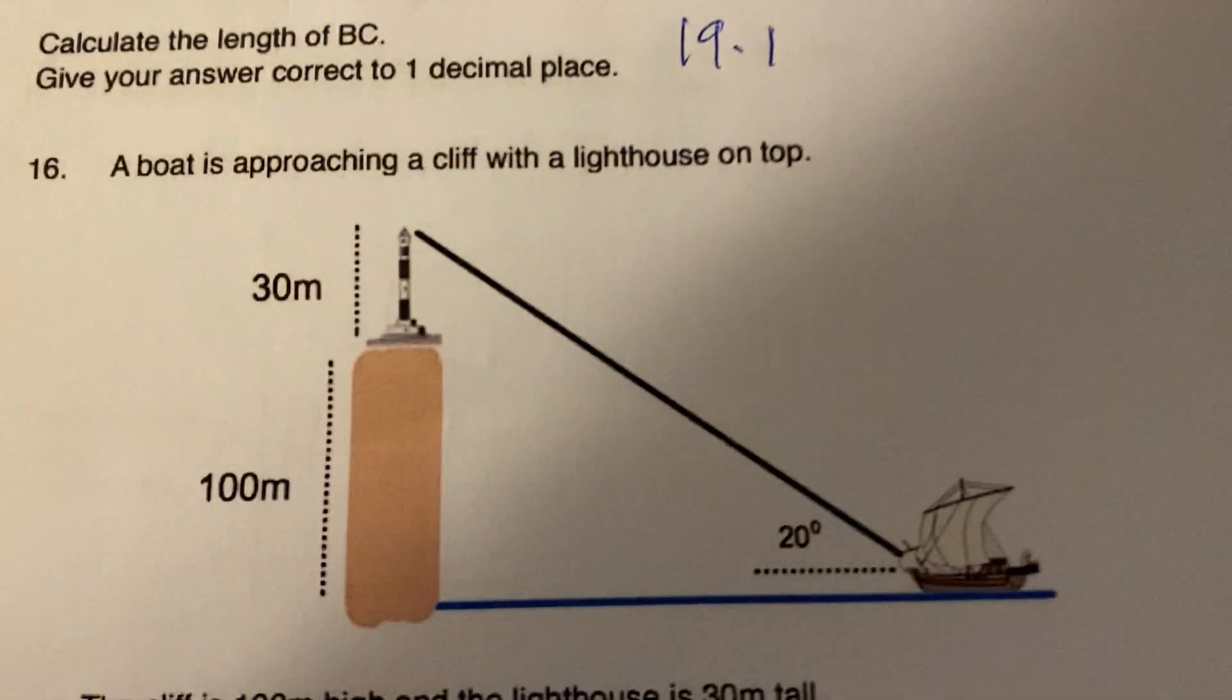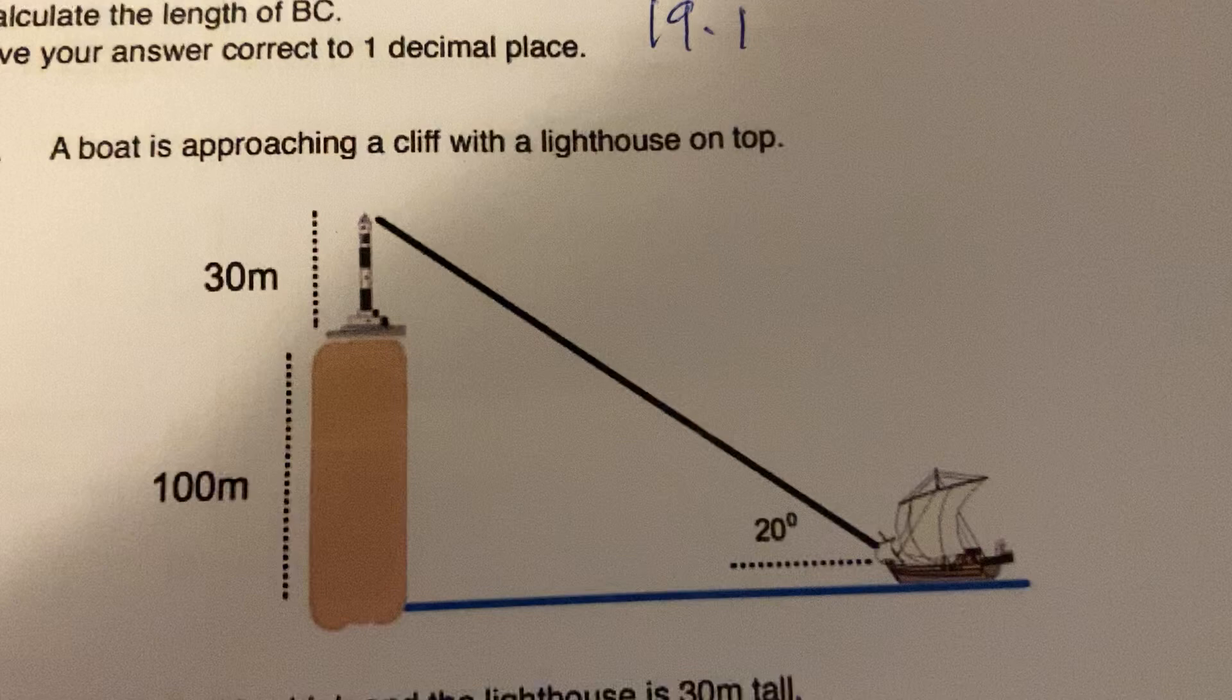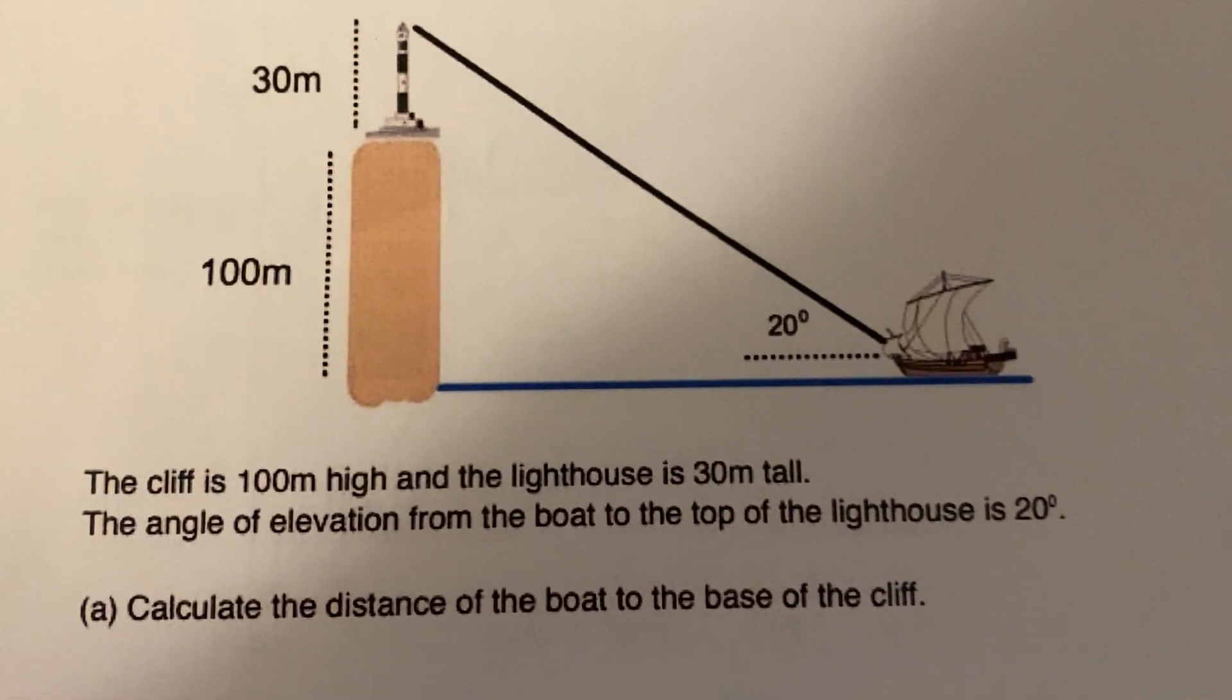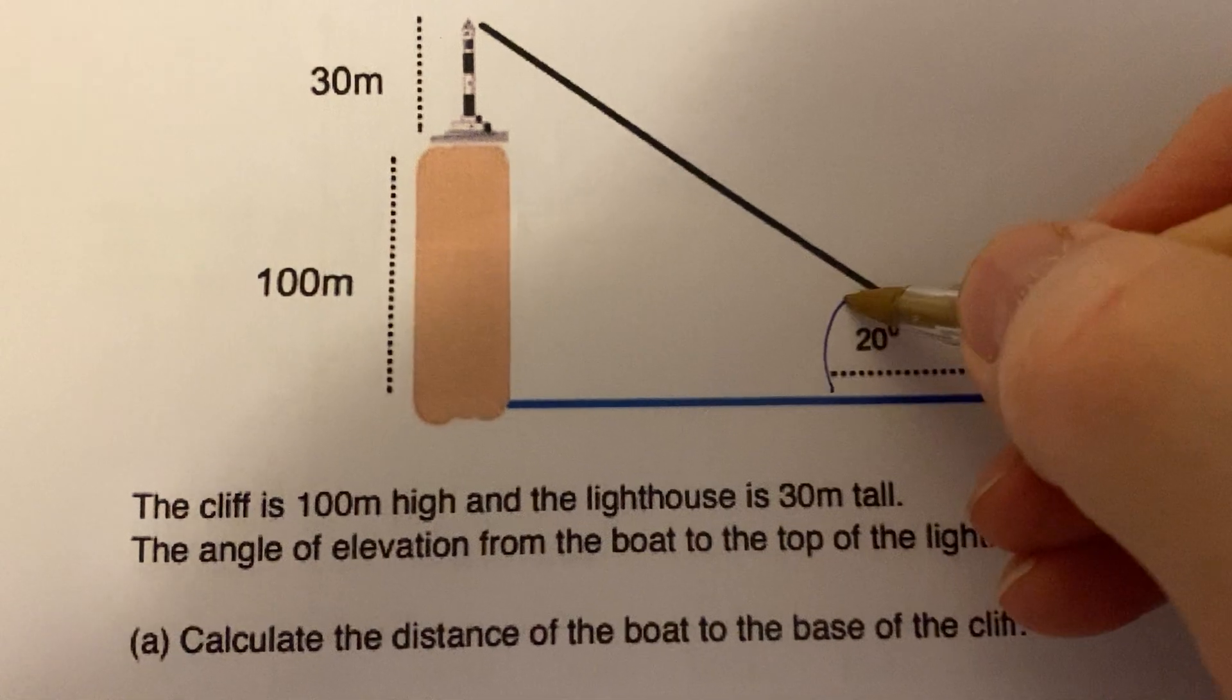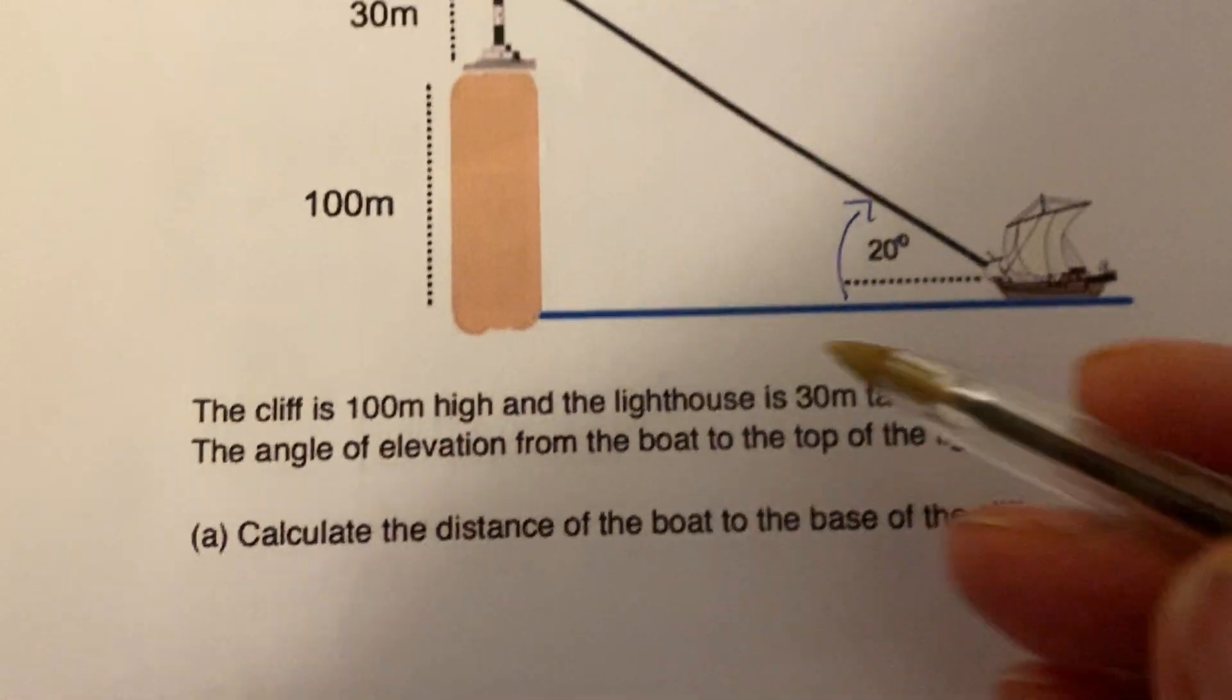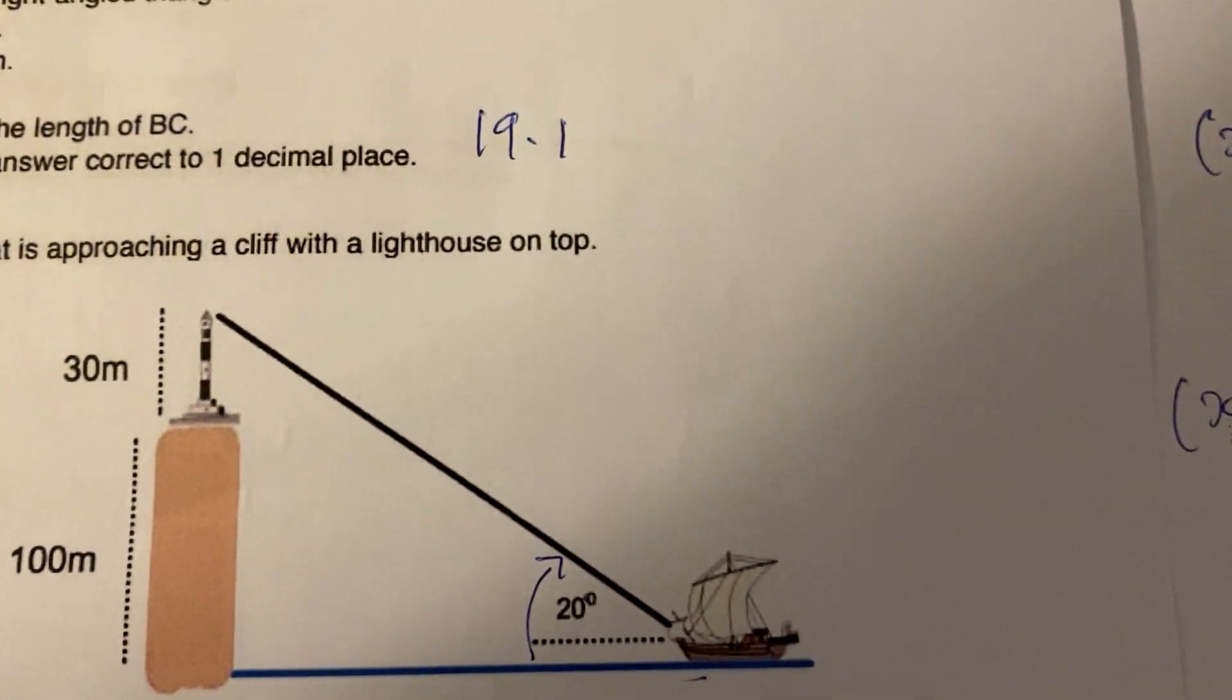Right, a boat is approaching a cliff with a lighthouse on top. The cliff is 100 meters, lighthouse is 30. Angle of elevation - remember, to elevate you go towards the horizon and look upwards - that's 20 degrees. It says calculate the distance of the boat from the base of the cliff. So draw out your triangle.